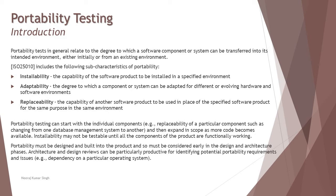Adaptability is the degree to which a component or system can be adapted for different or evolving hardware and software environments. For example, you may have defined a product for Windows 7, then updated it for Windows 8 and Windows 10, but that version is not compatible to be deployed on Linux — that's something we need to take care of. So adaptability is another parameter we generally check.